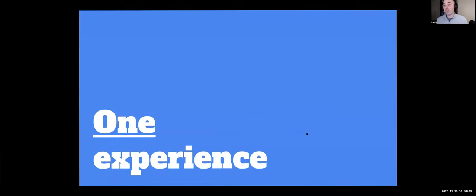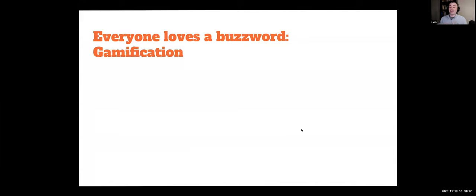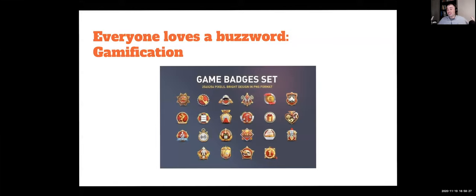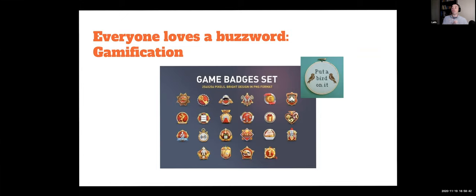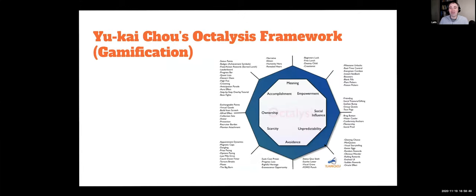The first framework is at the experience level — the core of what we do: making products and experiences. Everyone loves a buzzword, and one that is continually in our industry is gamification. A lot of times when gamification comes up, it's like 'let's make badges' — a pretty incomplete way of thinking about it. So I'd like to put forward the octalysis framework, done by Yu Kai Chou. It's called octalysis because there are eight — eight different categories of ways to think about gamification.